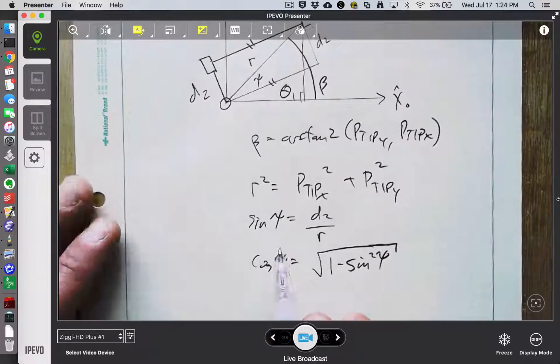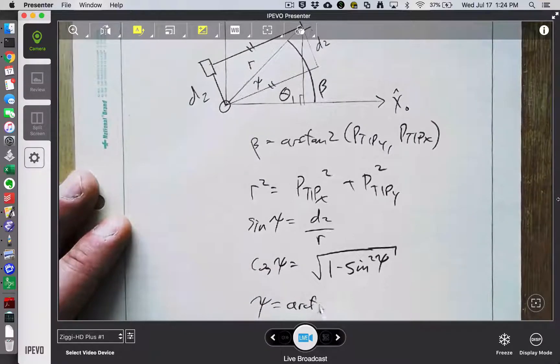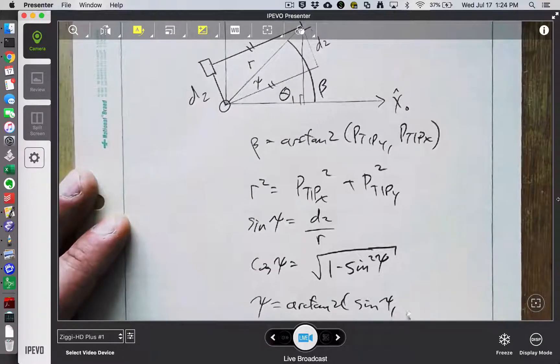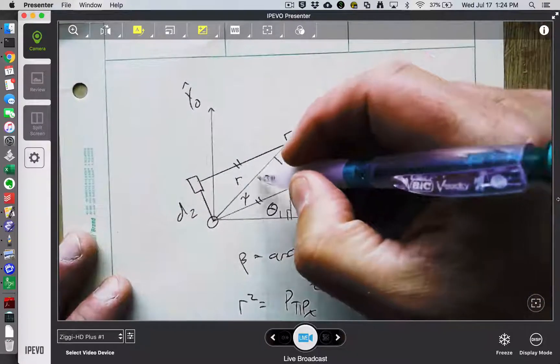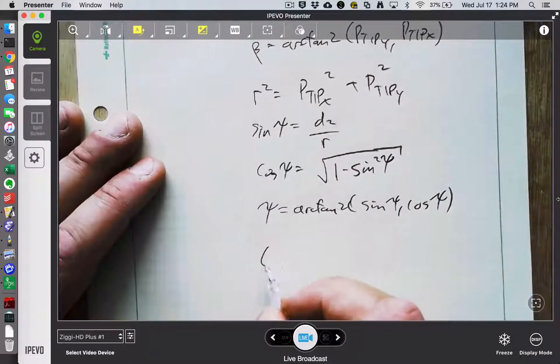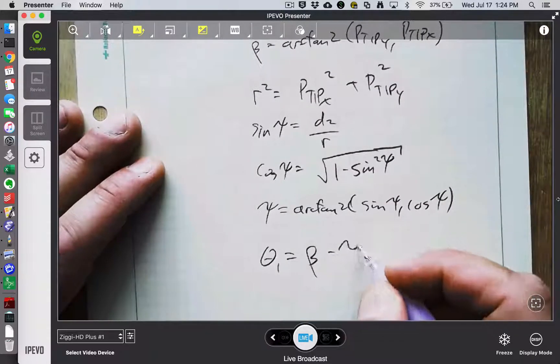And then once I know Psi, so at that point I could say Psi is the arctan2 of sine Psi comma cosine Psi. Once I know Psi, I think it's fairly obvious that Psi plus theta 1 is equal to beta. So the true theta 1 that I'm looking for is beta minus Psi.